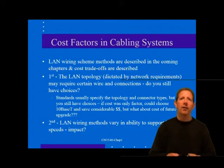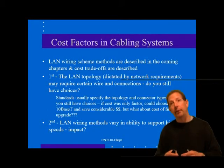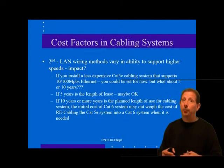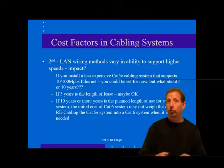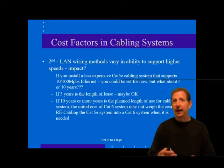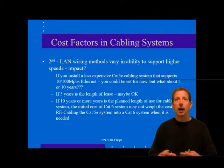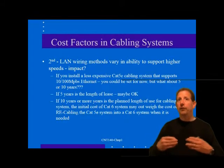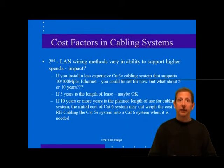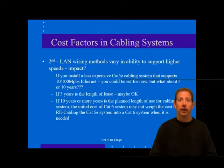When you consider the cost of future upgrades, a Cat 5e unshielded twisted pair installation would support not only 10Base-T but also 100 Mbps and Gigabit for the future. You may also want to invest in Cat 6 or Cat 7 wiring components to support any future upgrades. Second, LAN wiring methods vary in the extent to which they will support higher speed network data rates, including future standards that may not be fully implemented yet.